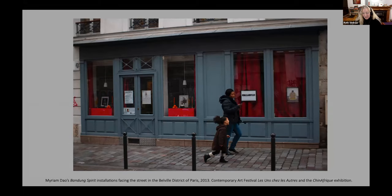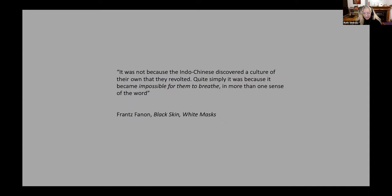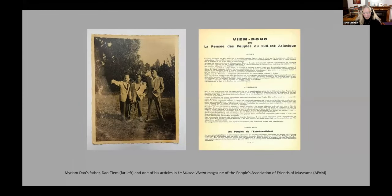It was Fanon's words that drew the link for Dao between her experience as a teacher in segregated classrooms and her father's experiences in the French colony of Indochina. In the conclusion to Black Skin White Masks, Fanon wrote: 'It was not because the Indochinese discovered a culture of their own that they revolted. Quite simply, it was because it became impossible for them to breathe in more than one sense of the word.' Miriam's father, Dao Tiem, was born in northern Indochina, historically under Chinese influence and then colonized by France in 1887. Although he associated deeply with Chinese Daoist culture and was by profession a Daoist diviner, he could not speak a Chinese language. Growing up in Indochina, he could speak Vietnamese and French, but was forbidden to converse in Vietnamese in his parents' home.